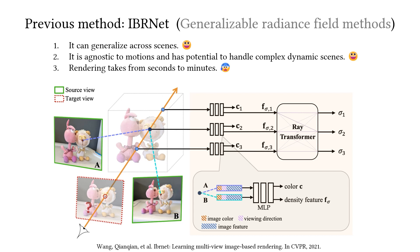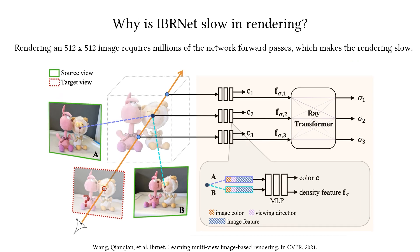However, their rendering speed is slow. So why is IBRNet slow in rendering? One important reason is that they require many forward passes through a neural network for rendering a pixel.